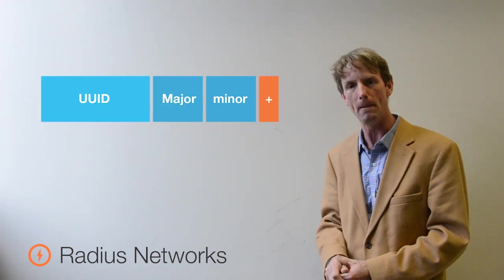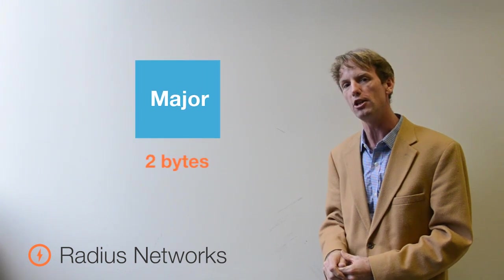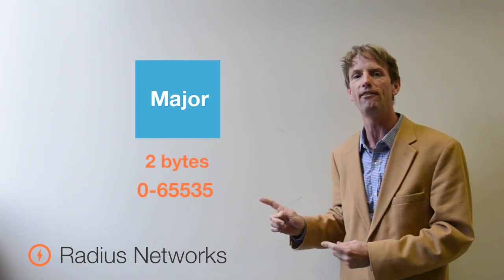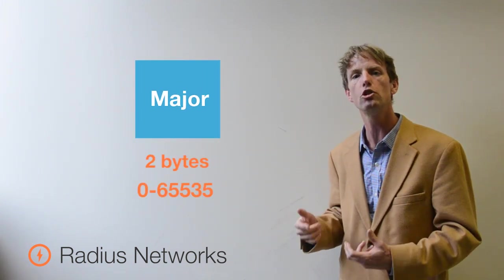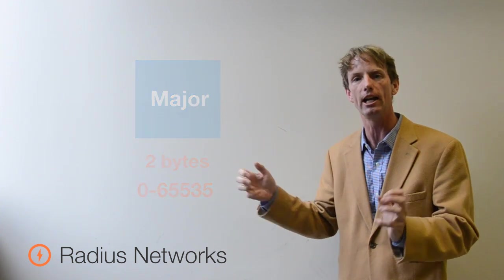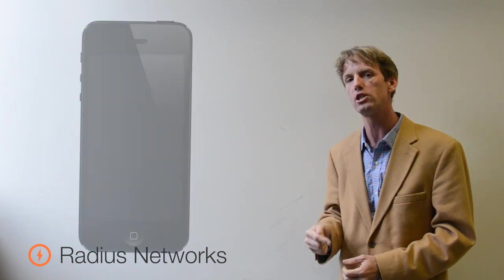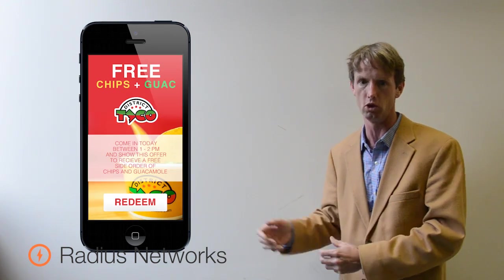The second identifier is called the major. It's a two-byte value that ranges between 0 and 65535. It's usually used to group your beacons in some kind of logical area, and you can use it in iOS to trigger apps in the background when you see something in this group.